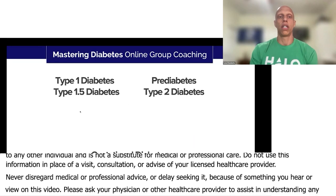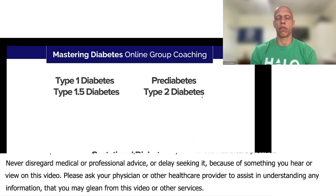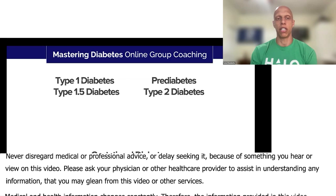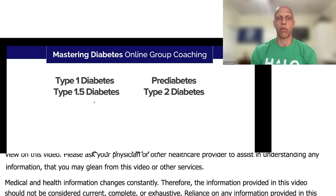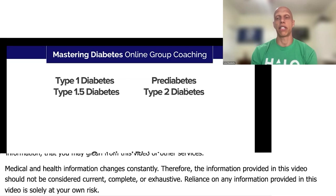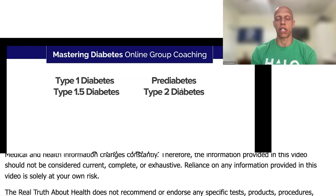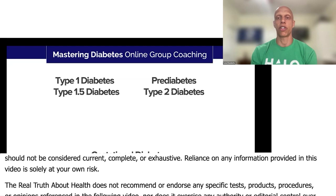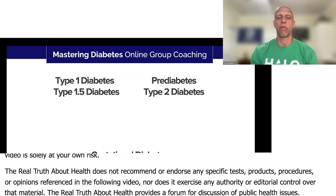In the world of diabetes, you basically have multiple different types of diabetes. You have the autoimmune diabetes on the top left — Type 1 and Type 1.5. Then you have pre-diabetes and Type 2, which is the focus of this presentation, and those are considered lifestyle diabetes.